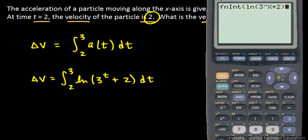So we'll do this on the calculator. I've got numerical integration of the natural log of 3 to the x plus 2, comma, so x goes from 2 to 3, and hit enter, and it calculates 2.872.